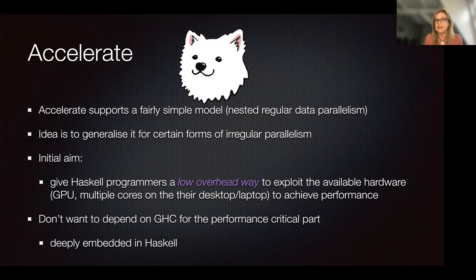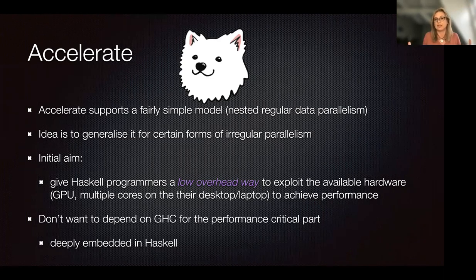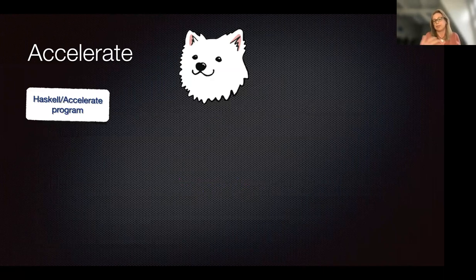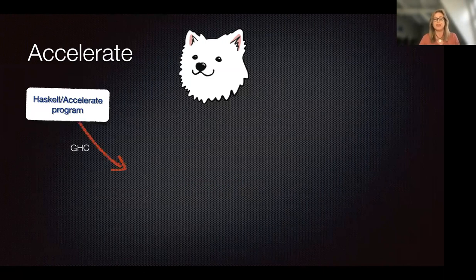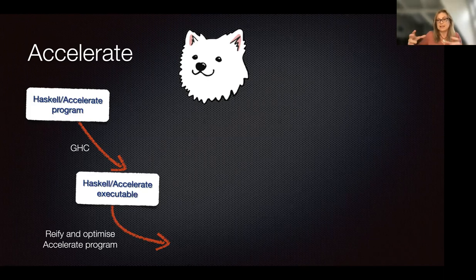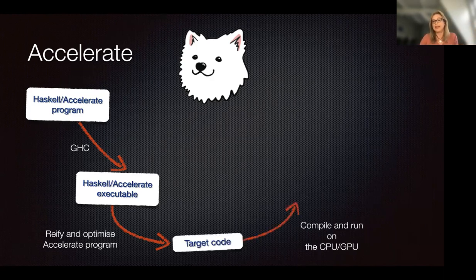We explicitly maintain the abstract syntax tree of the Accelerate program and write the compiler that maps this AST to various architectures completely ourselves. The programmer writes their Haskell program with the deeply embedded Accelerate part, then GHC compiles it to an executable, and during Haskell runtime the Accelerate program is generated and then compiled and sent to the target architecture — GPU or CPU — where it's executed.